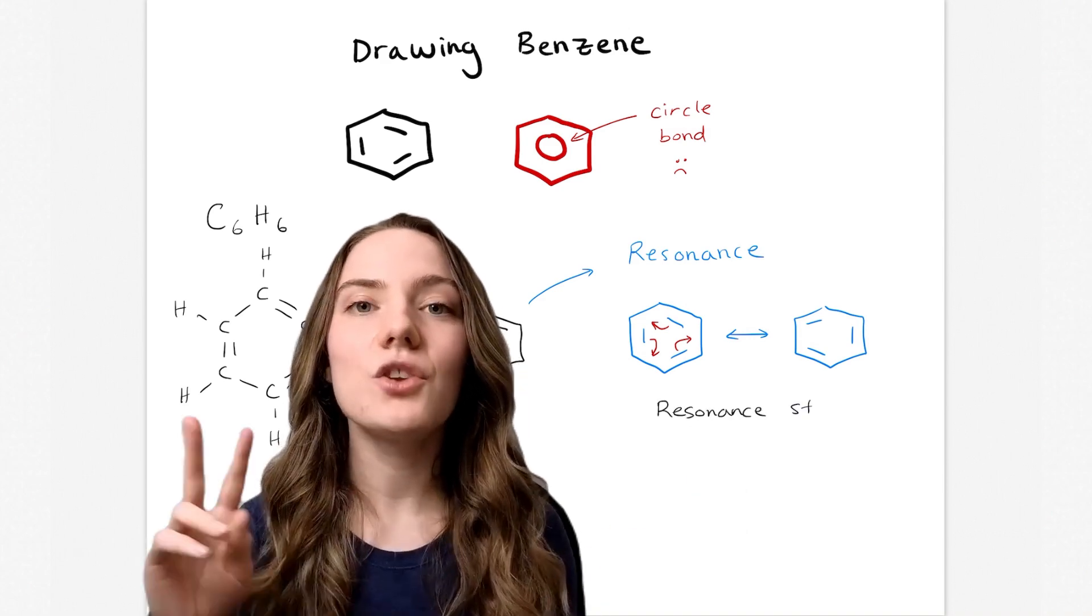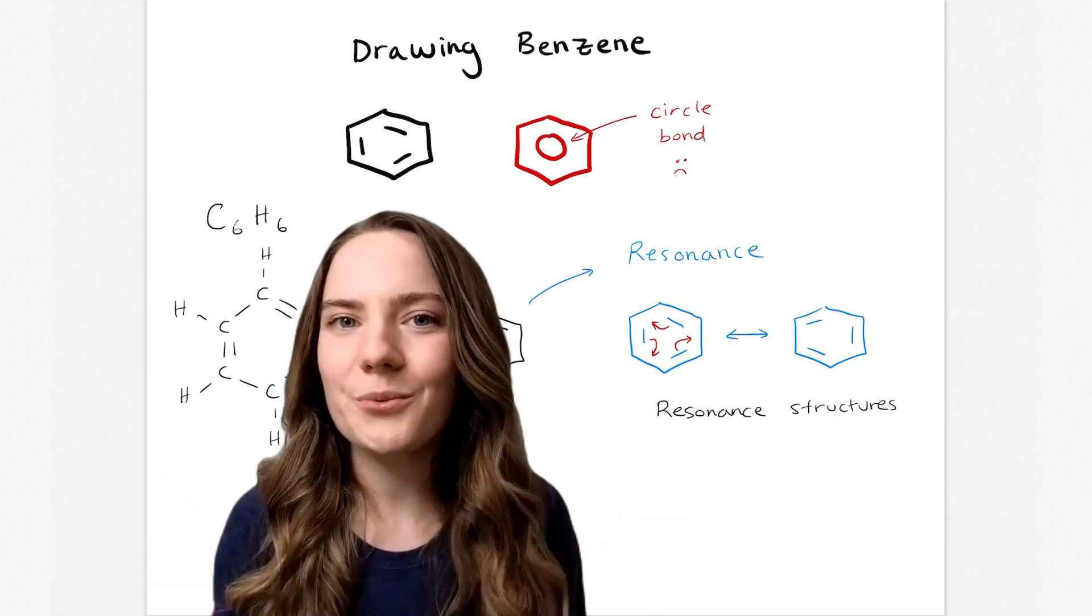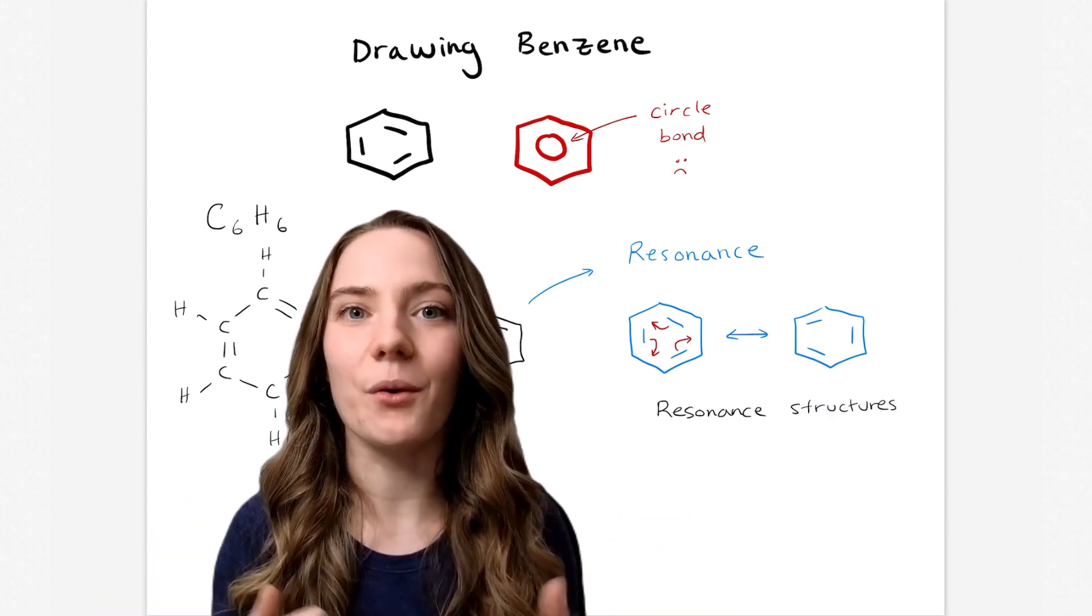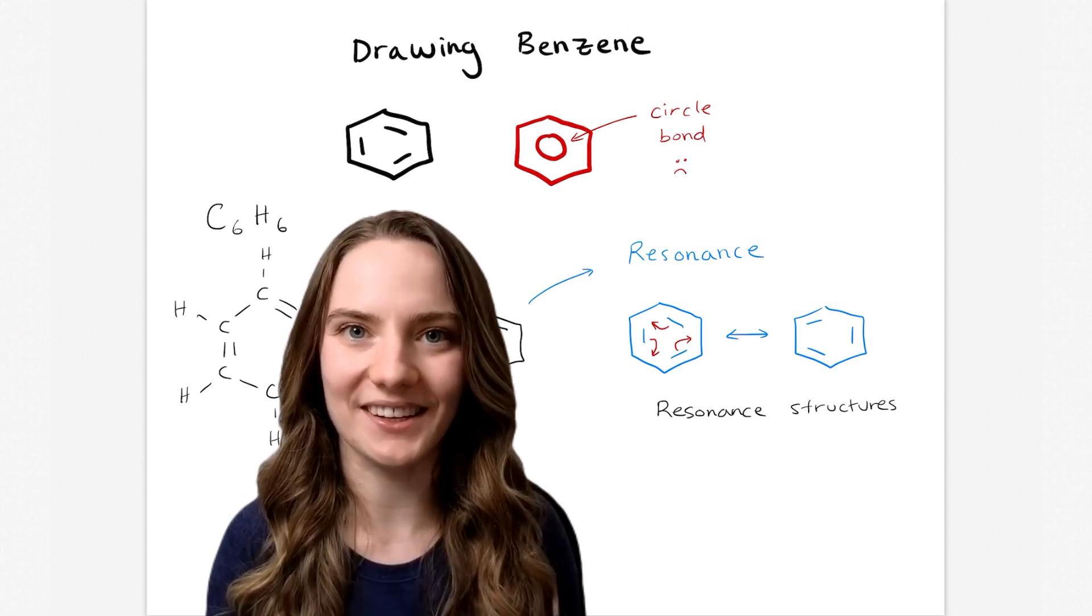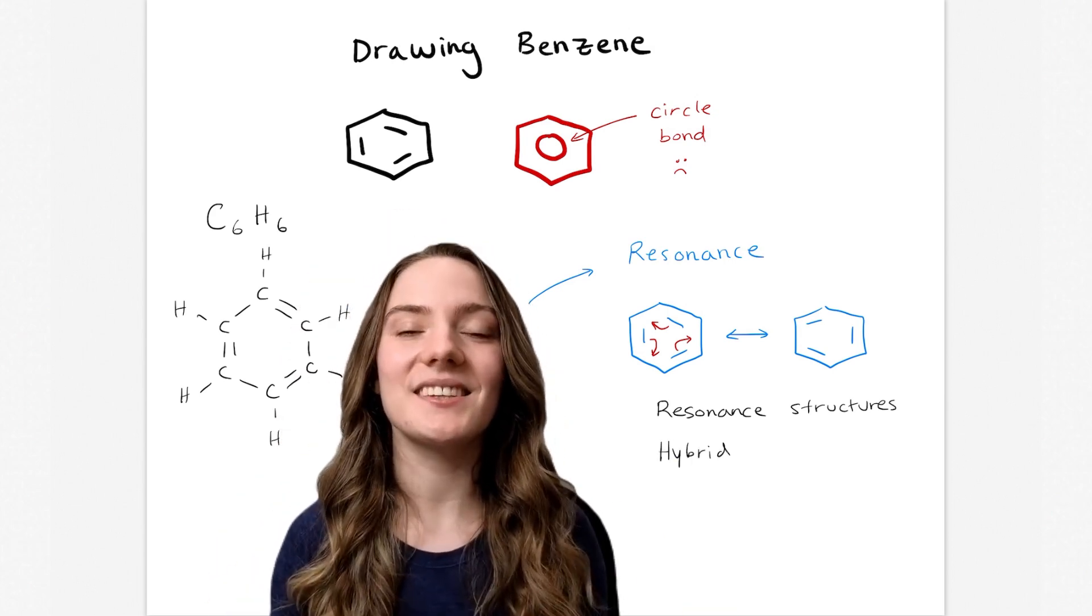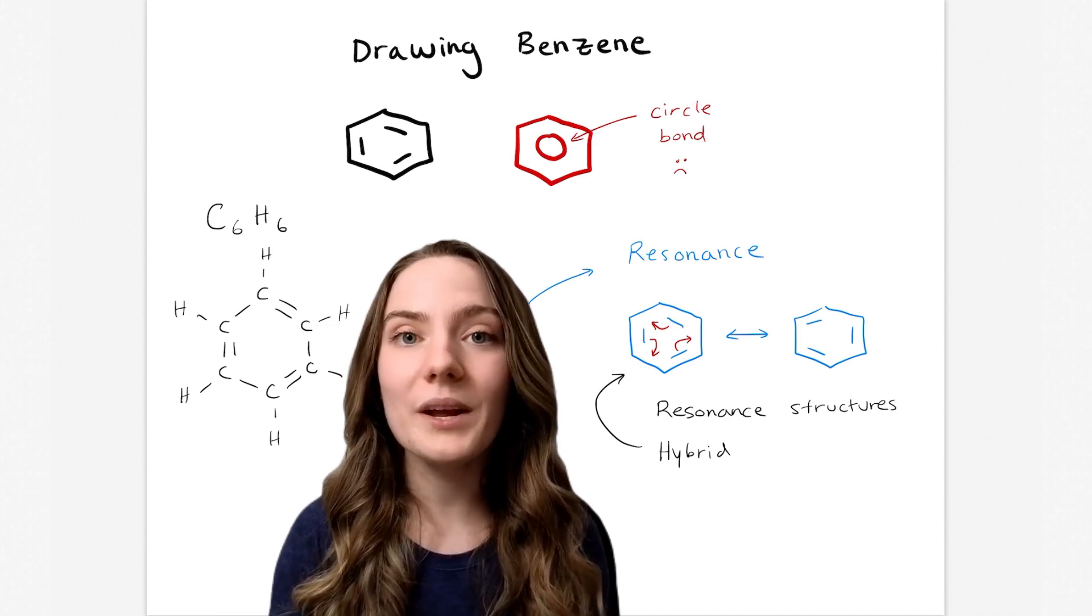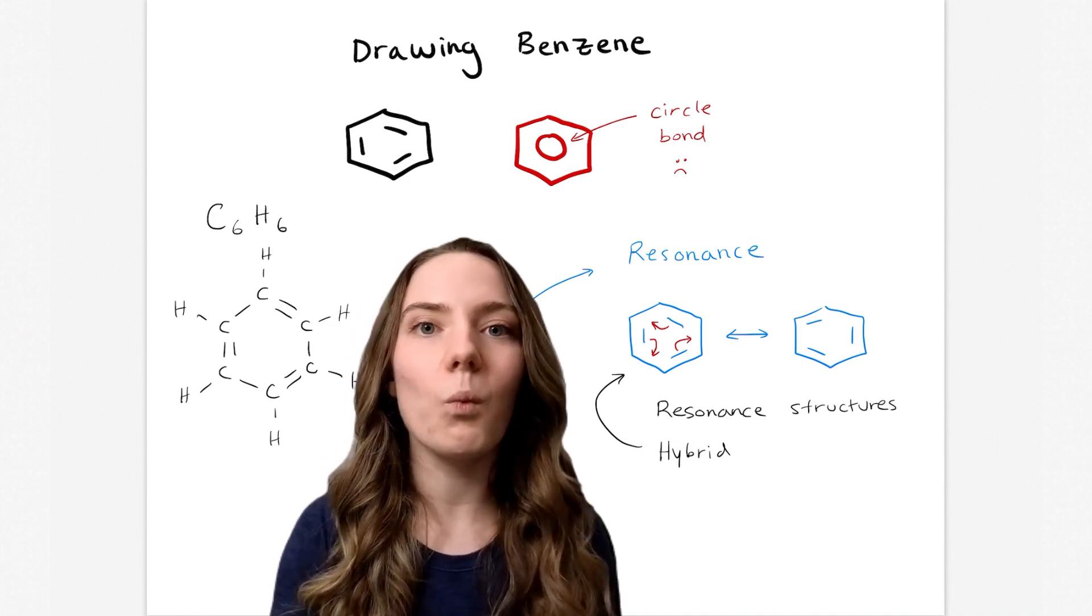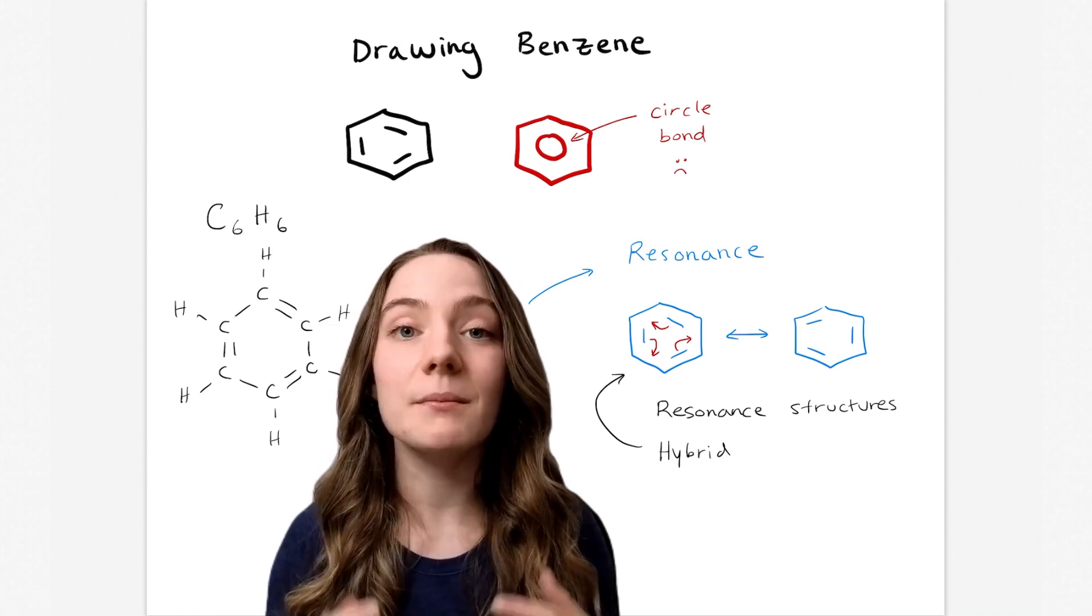So we have these two resonance structures. But which one actually represents the right way to draw benzene? Well the truth is that benzene exists as a hybrid between these two resonance structures. So it's not one or the other. It's both.